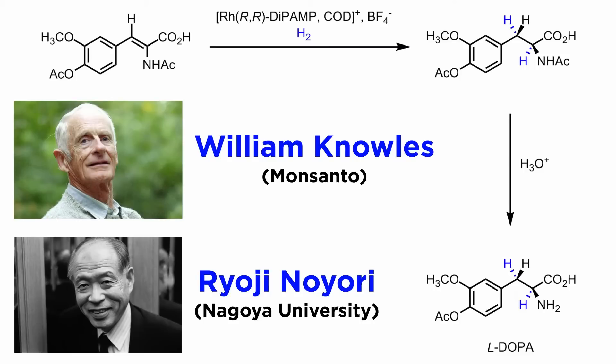We just looked at enantioselective hydrogenation of olefins, and in order to do this we highlighted breakthroughs by Knowles and Noyori. But if we can hydrogenate carbon-carbon pi bonds, are there methods for enantioselectively hydrogenating pi bonds between carbon and some other element?